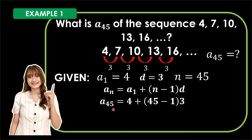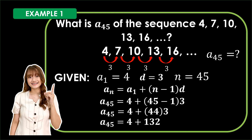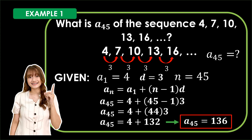We have a sub 45 is equal to 4 plus the quantity 45 minus 1 times 3. We know that 45 minus 1 gives us 44. So we now have: a sub 45 is equal to 4 plus 44 times 3. We know that 44 times 3 is 132, and 132 plus 4 gives us 136. Thus, our 45th term is 136.